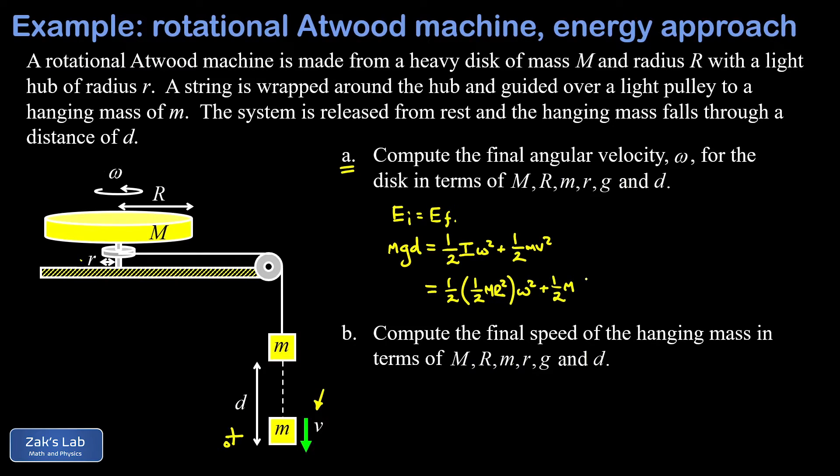Next we want to relate the linear speed of this hanging mass to the rotational speed of the disk. The whole trick here is to realize that if our mass is moving with the speed of v, then the string itself is moving with the speed of v, and that means the string is moving with the speed of v even right there at the edge of that little hub underneath our disk.